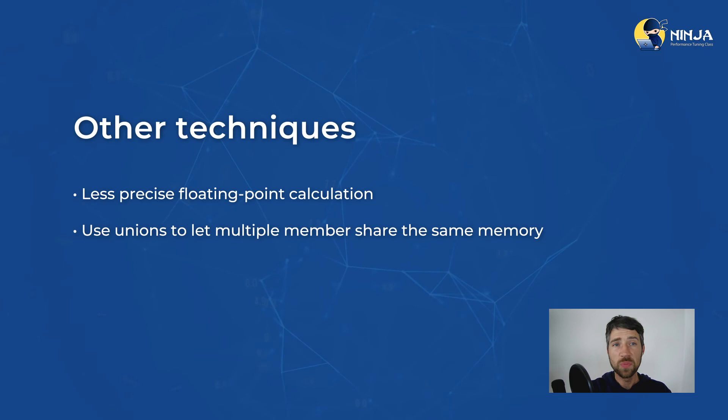We cannot use bitfields to represent floating-point values, but we can reduce the required memory space by sacrificing precision. In other words, if we don't need very accurate results for our floating-point calculations, we can use float instead of double, which will save us 4 bytes.